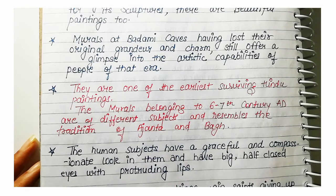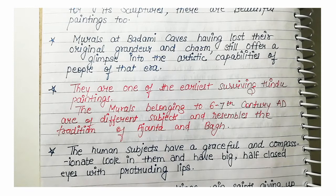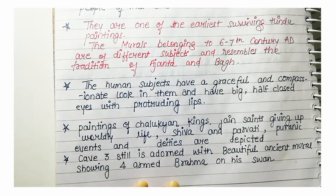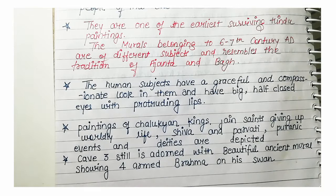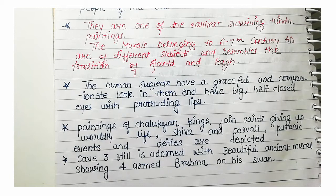Human subjects have a graceful and compassionate look, with big half-closed eyes and protruding lips. There are paintings of Chalukyan kings, scenes of renunciation of worldly life, and depictions of Shiva and Parvati. Ancient events and deities are depicted. Cave 3 is adorned with beautiful ancient murals showing four-armed Brahma on his swan.